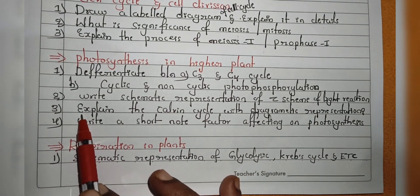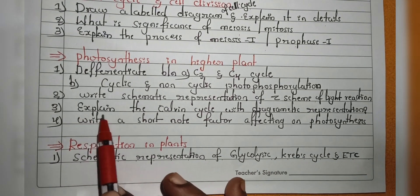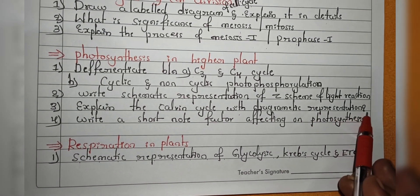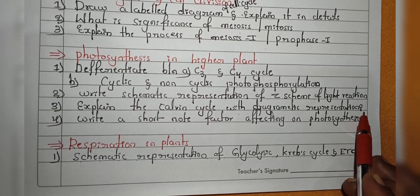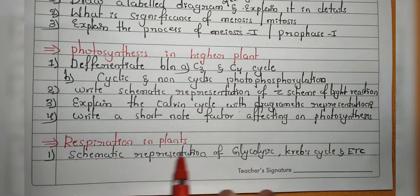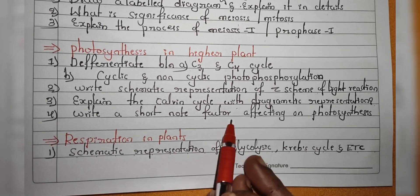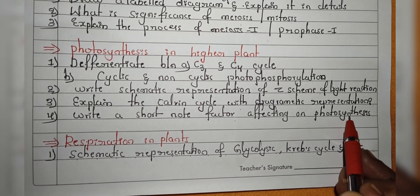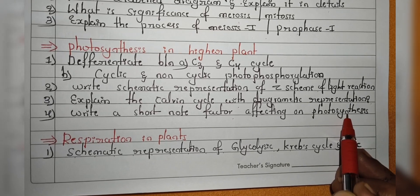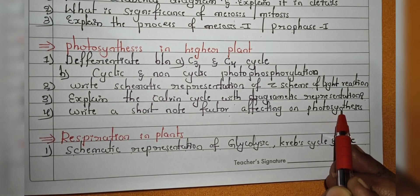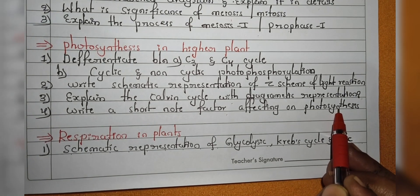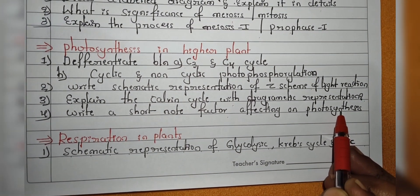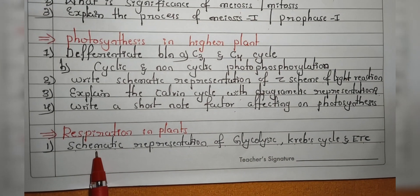Third topic is: explain the Calvin cycle with a diagrammatic representation, which is also very important. Next, write a short note on factors affecting photosynthesis — you have to write about light, temperature, humidity, water molecules, etc.